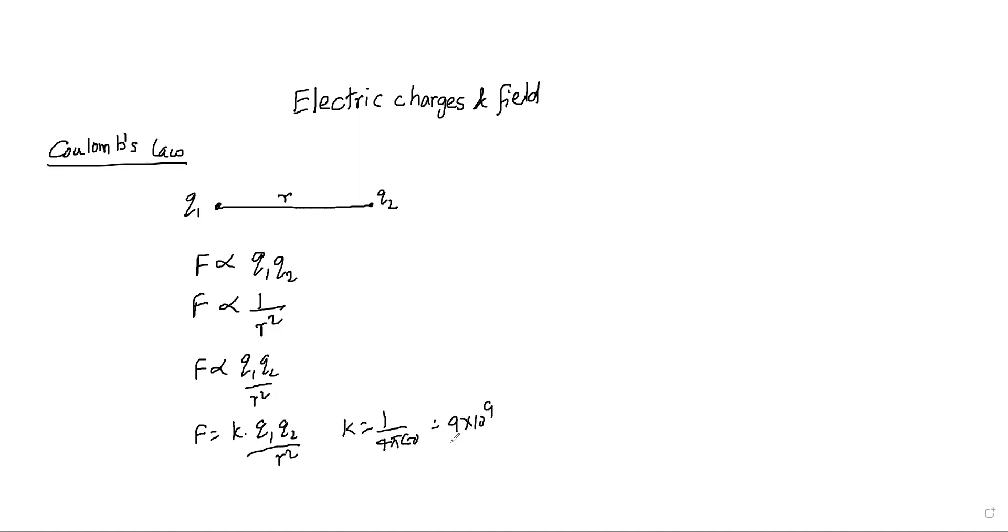The units of k - generally students will be confused. So here k is equal to F r square by q1 q2. Force units are newtons, r square is distance square, which means newton meter square by coulomb into coulomb, coulomb square. So newton meter square per coulomb square is the units of k.